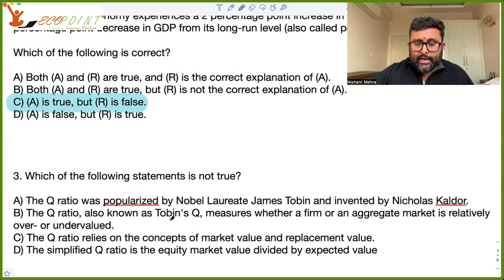Which of the following statement is not true? This is about Q ratio. I hope you remember about Tobin's Q, which is the market value of the firm upon the replacement cost of the assets. That is the Q ratio. So it was popularized by James Tobin and invented by Nicholas Kaldor. That's true. So Kaldor was the one who introduced it, but it was popularized by Tobin. So this is true. So you know how to mark this.